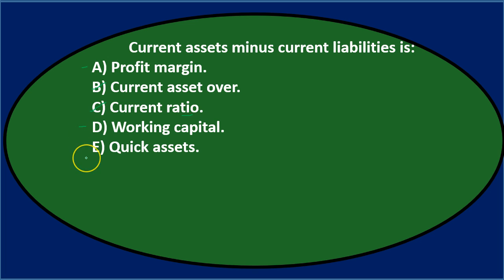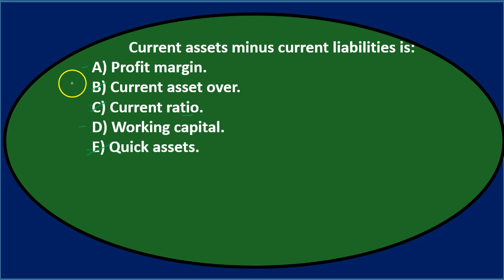Quick assets in a ratio would be similar to the current ratio, but if we're just talking about adding up assets there's no subtraction, so it doesn't seem like E. Profit margin would be sales minus cost of goods sold, so that doesn't fit either. Working capital has current assets and current liabilities but it's not a ratio — it's a subtraction problem. Final answer: current assets minus current liabilities is D — working capital.